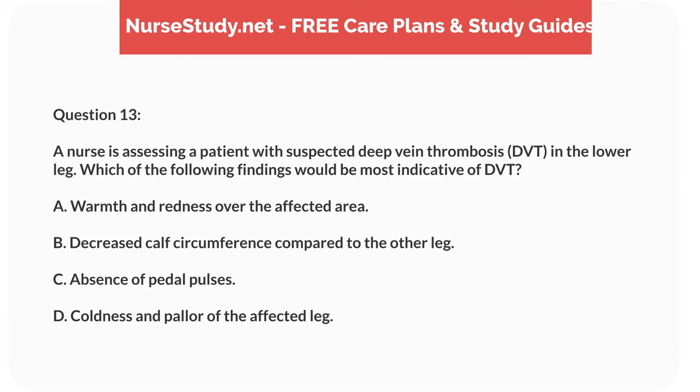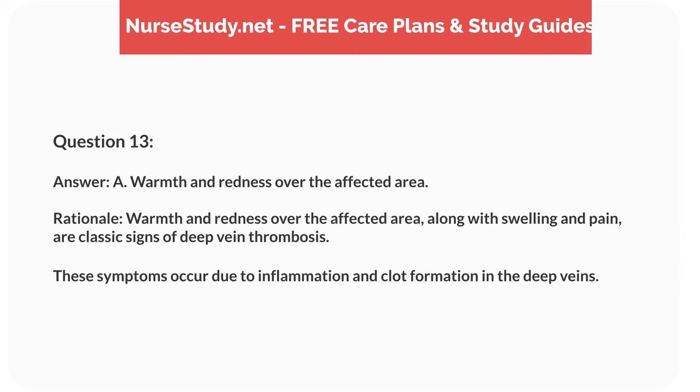Question 13. A nurse is assessing a patient with suspected deep vein thrombosis (DVT) in the lower leg. Which of the following findings would be most indicative of DVT? A. Warmth and redness over the affected area. B. Decreased calf circumference compared to the other leg. C. Absence of pedal pulses. D. Coldness and pallor of the affected leg. Answer: A. Warmth and redness over the affected area. Rationale: Warmth and redness over the affected area, along with swelling and pain, are classic signs of deep vein thrombosis. These symptoms occur due to inflammation and clot formation in the deep veins.